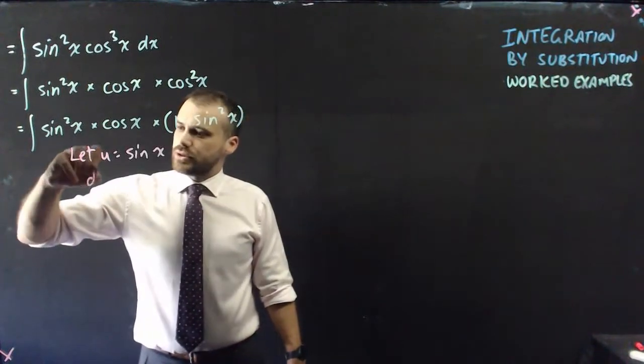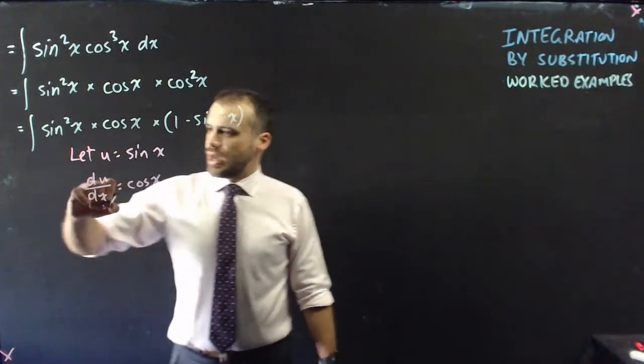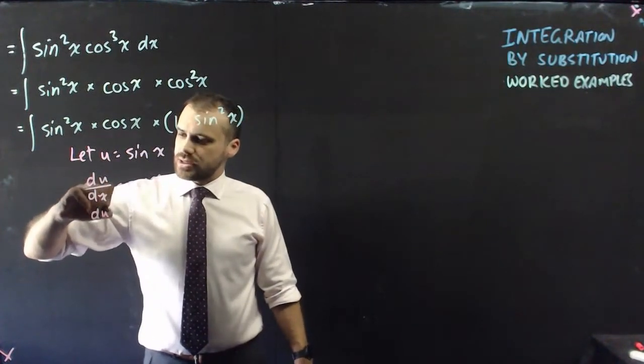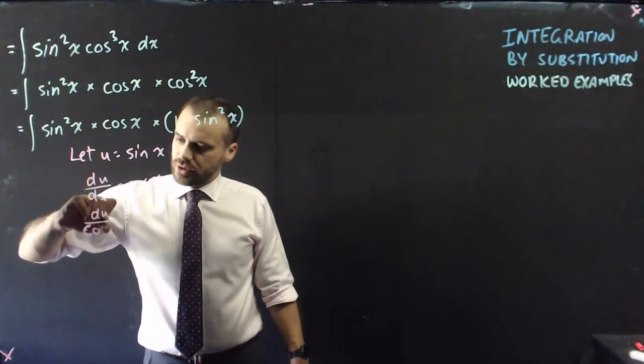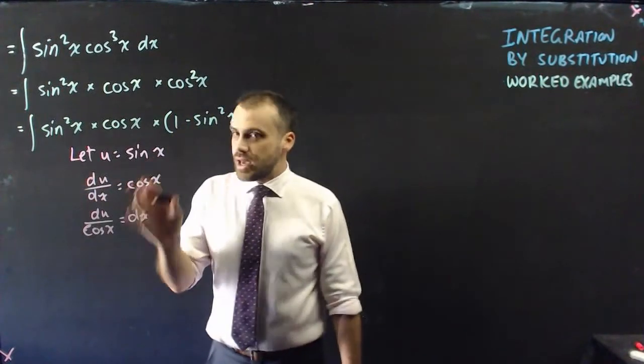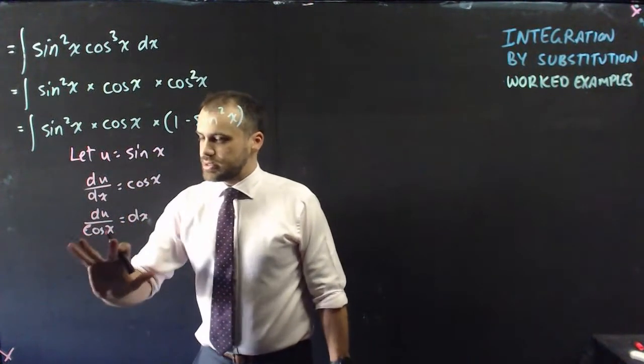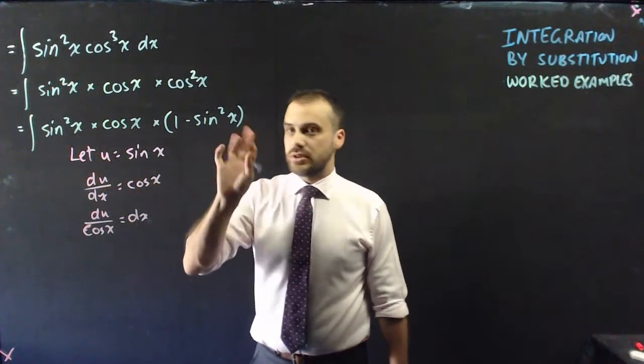Now, of course, that means that the derivative of u with respect to x is going to be equal to cos x. And we can rewrite that as du over cos x equals dx. And now we can substitute our u twice and substitute our dx into this equation.